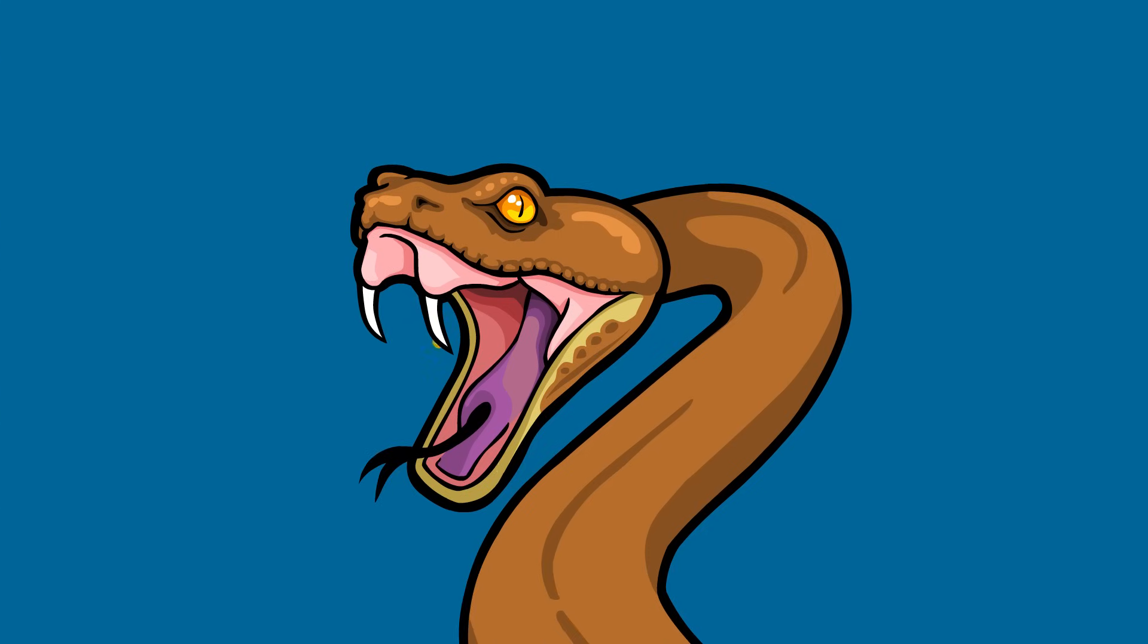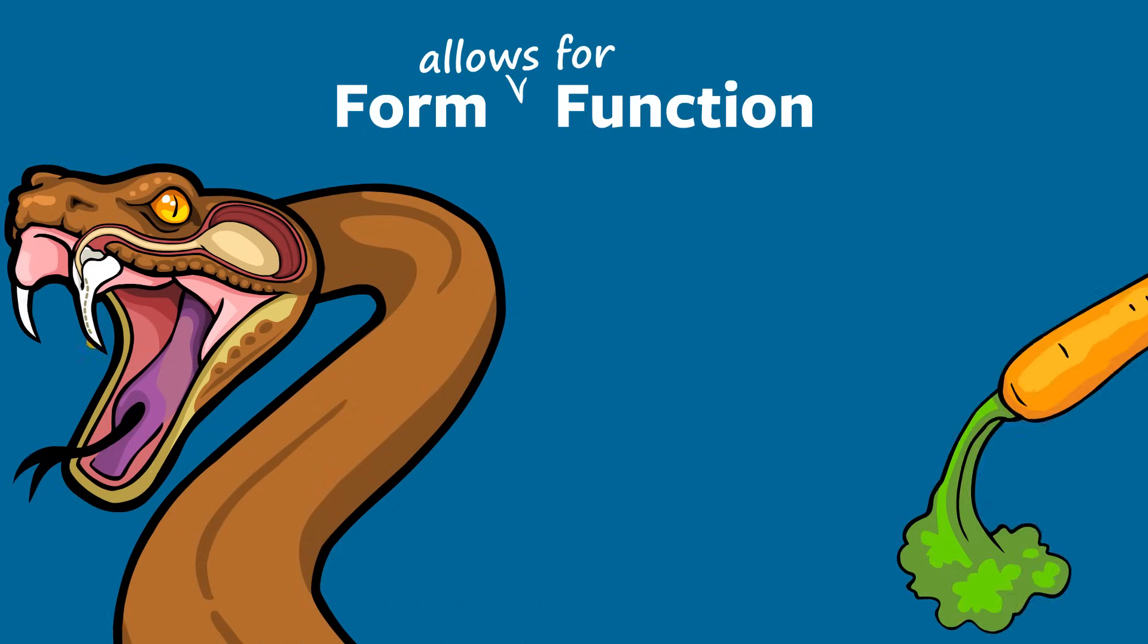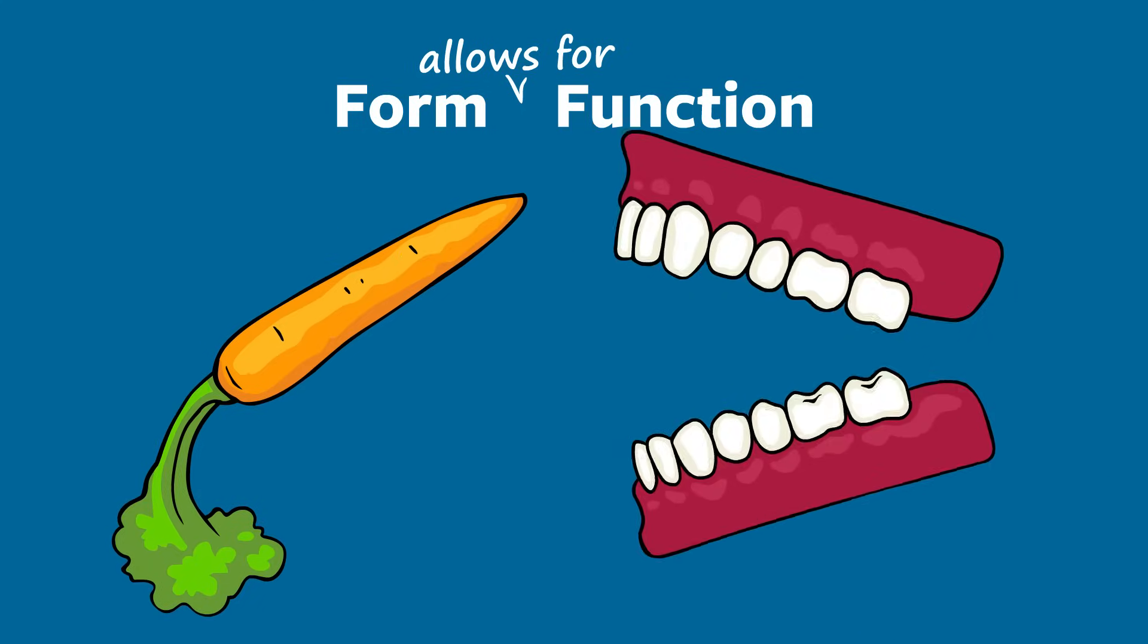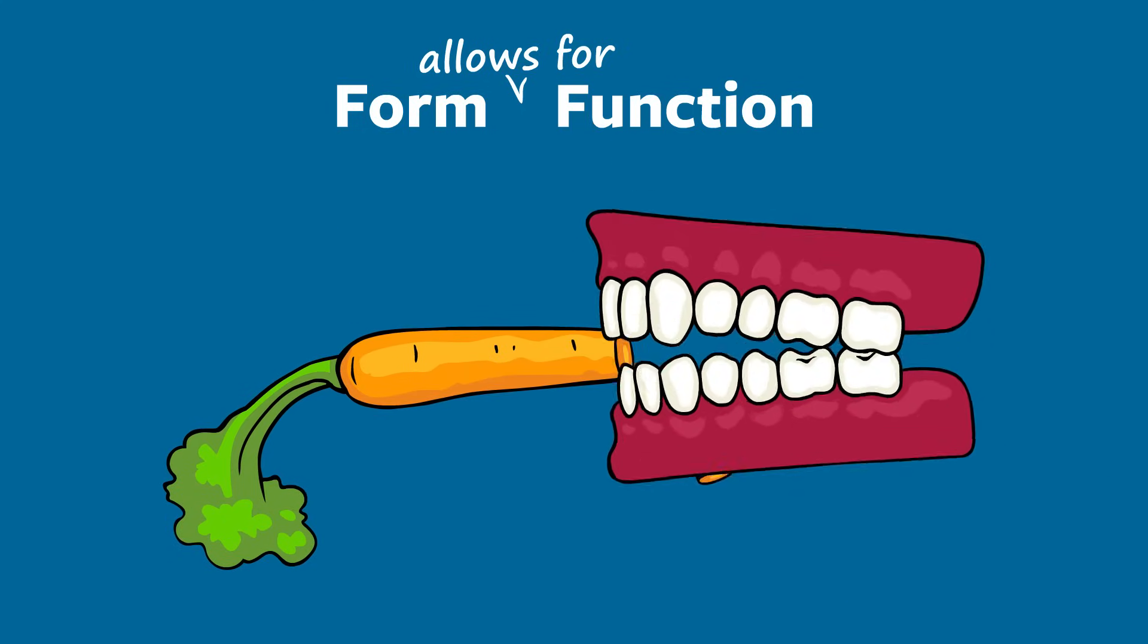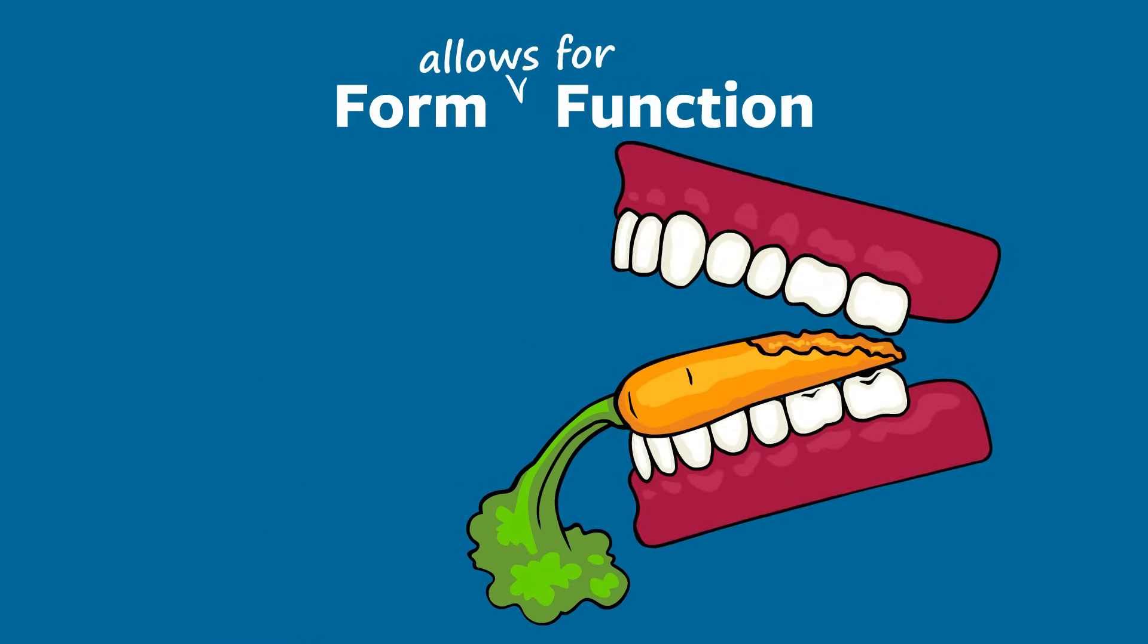In biology, it's often said that form equals function, or more accurately, form allows for function. The form of your front teeth, for example, allows them to function as food chopping tools, while the form of your molars allows them to function as food smashing tools.